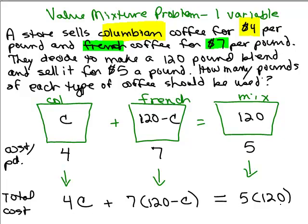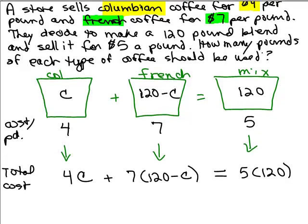Now if you don't like that C, you could change it to an X. I just did it for C, so at the end I'm going to remember that C stands for how many pounds of Colombian coffee. So our next step is to solve this equation.